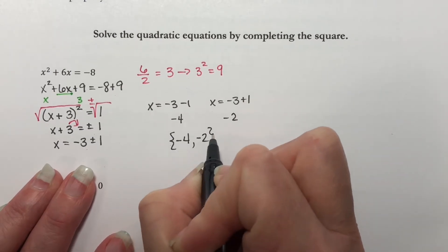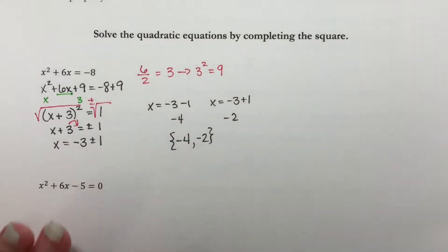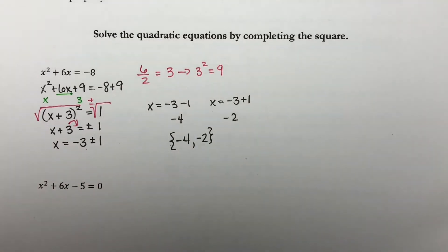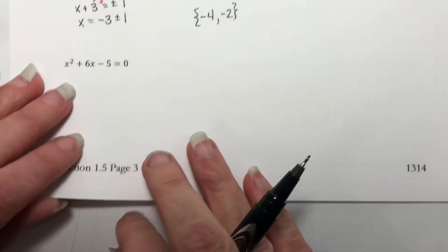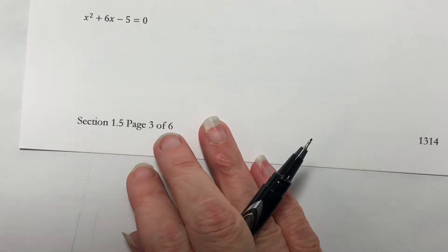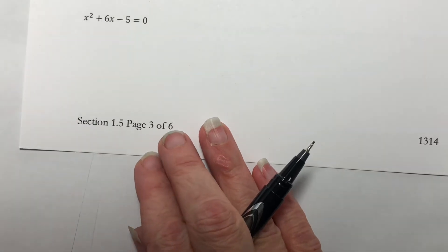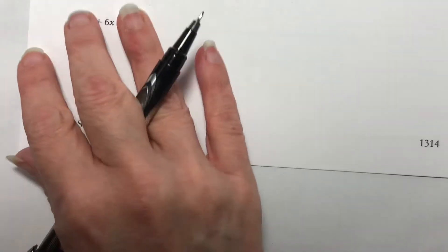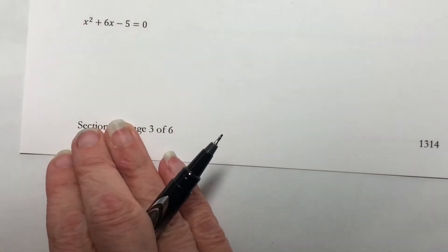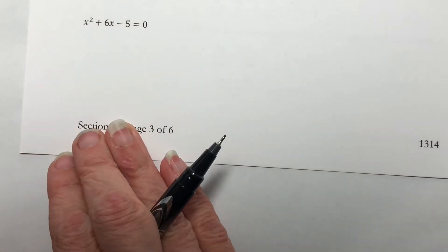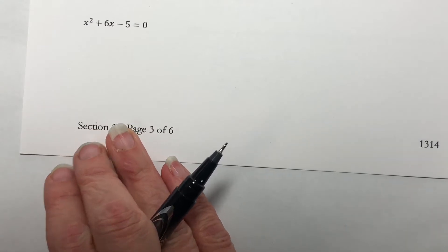And you write your answers in a set. So let's complete the square on x squared plus 6x minus 5 is equal to 0.